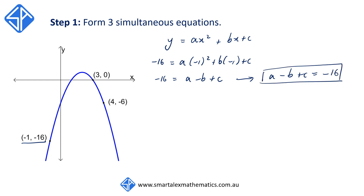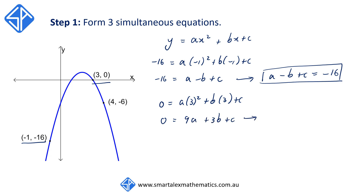We're then going to use the next point, 3, 0, to form another equation. So 0 is equal to a times 3 squared plus b times 3 plus c, giving us 9a plus 3b plus c is equal to 0. This is our second equation.